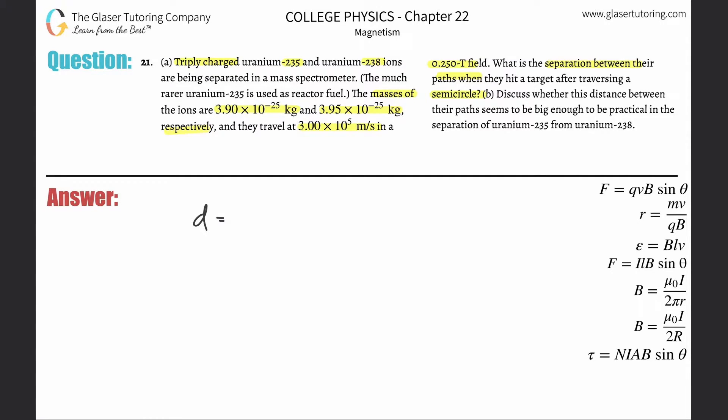To find the distance here, the distance will be equal to two times the radius of the larger minus two times the radius of the smaller.